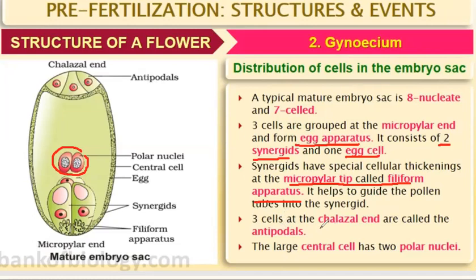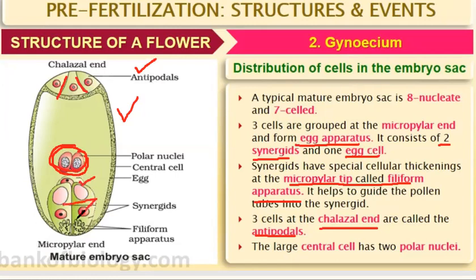Three cells at the chalazal end are called the antipodals. This is an important question for board exams — the structure of the female gametophyte. At the chalazal end are three antipodal cells. Below those, in the center, are the two polar nuclei. At the micropylar end is the egg apparatus: two synergids and one egg cell. The synergids have the filiform apparatus — cellular thickening.